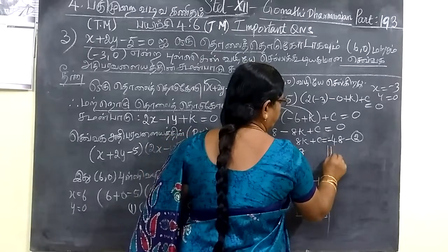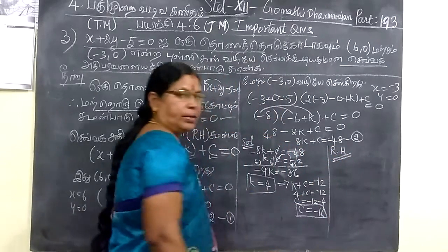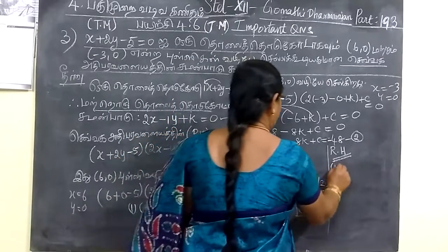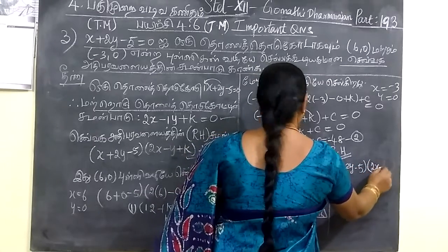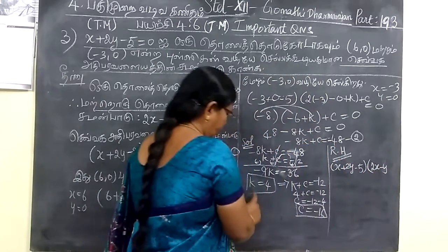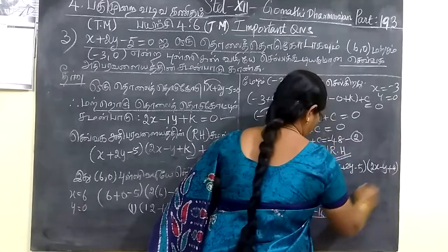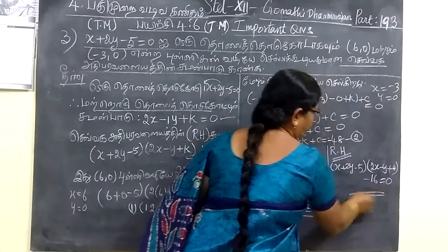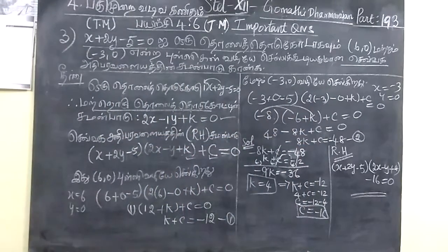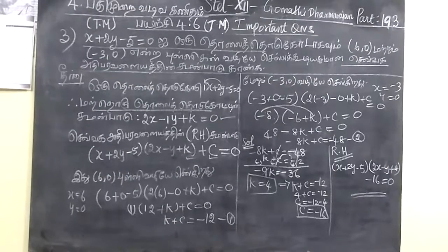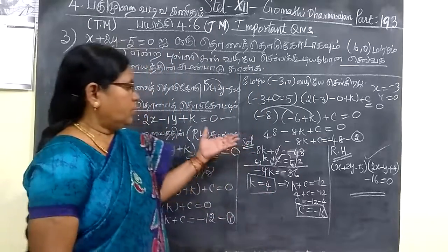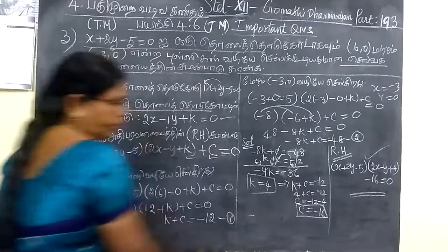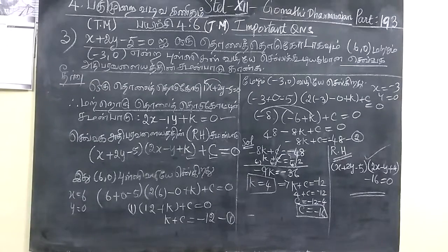Therefore, combined equation of rectangular hyperbola: x plus 2y minus 1, then 2x minus y plus k value 4, then c value minus 16 equal to 0. The answer is x plus 2y minus 1, then 2x minus y plus 4 minus 16 equal to 0. We will see one more question.